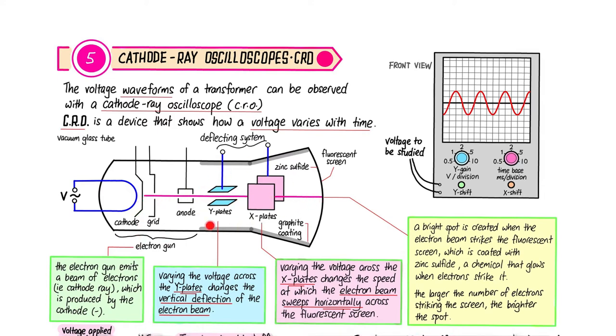Next is the deflecting system where you have the Y plates and the X plates. The thing that you want to study is connected to the Y plates, and these Y plates will deflect the electron beam in a vertical position, meaning it will deflect up and down moving in the vertical axis.